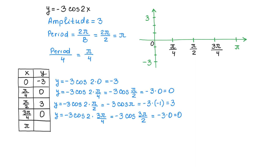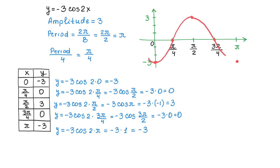In the last row: y equals negative 3 cosine of 2 times pi. Cosine of 2 pi is 1, so negative 3 times 1 is negative 3. Now we will plot each of these points and connect them to form the graph. The points are: (0, negative 3), (pi over 4, 0), (pi over 2, positive 3), (3 pi over 4, 0), and (pi, negative 3). Connecting them gives us the graph of y equals negative 3 cosine of 2x.